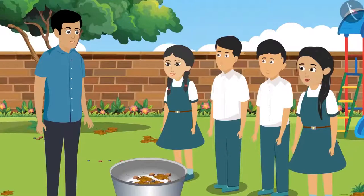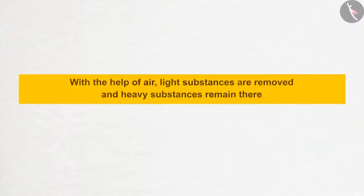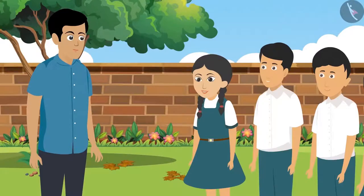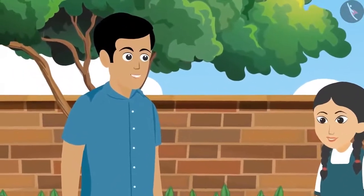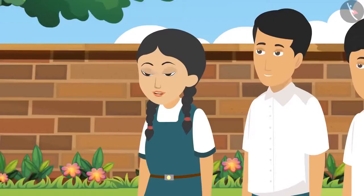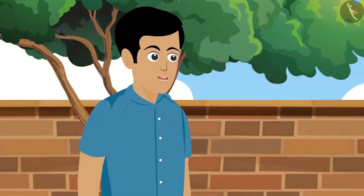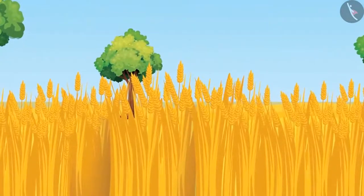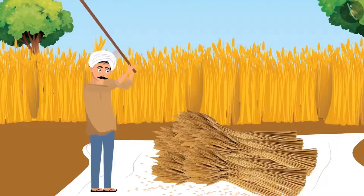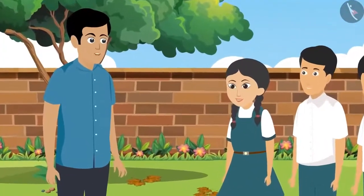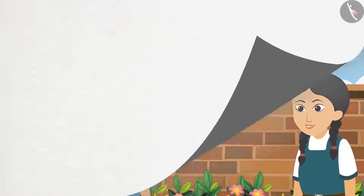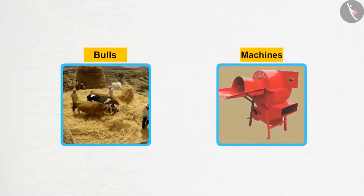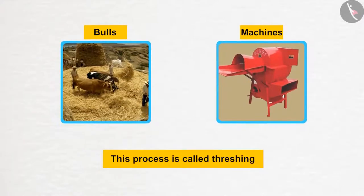Can anyone explain what happens in winnowing? With the help of air, light substances are removed and heavy substances remain. This process is mostly used to remove impurities from crops. And what is the process of threshing? The grains of wheat or rice are dried in the sun, tied in a bundle, and then beaten. The grains are separated from the plant — sometimes with the help of bulls or machines. This process is called threshing.